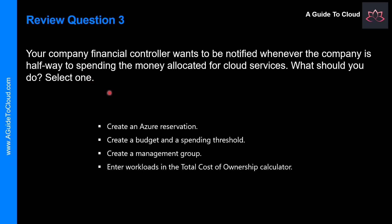Let's look at the third question. Your company's financial controller wants to be notified whenever the company is halfway to spending the money allocated for cloud services. What should you do? Select one answer. The key here is you need a mechanism to notify your financial controller whenever you are nearing your spending limit. Is it by creating an Azure reservation? Definitely not — reservation is the ability to reserve compute in Azure to save cost. Is it create a management group? Management groups manage multiple subscriptions. Is it entering workloads in the total cost of ownership calculator? Absolutely not. So these three are not the right answer.